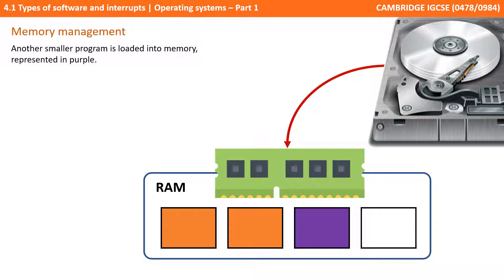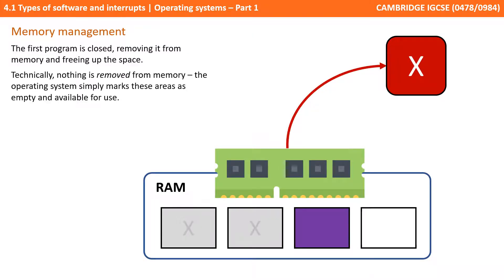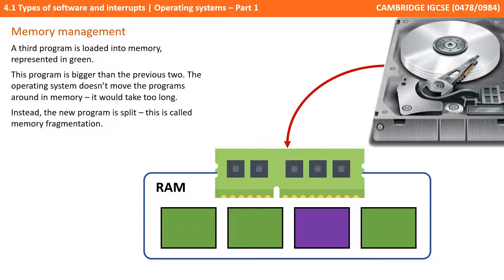Another smaller program gets loaded, represented by the purple square. The user may then choose to close the first program, so the orange squares disappear. In reality nothing is really erased from memory, but those memory locations are no longer being used by the application and so they are essentially marked as free and available for reuse. The user may then choose to open a third program, represented by the green squares. This third program is bigger than the previous two, but because the purple program is already taking up space in memory, it's not simply shifted around as that would be very slow. It stays where it is and the green program fits around it. So over time the memory becomes fragmented and the operating system has to manage these fragments across the entire memory.